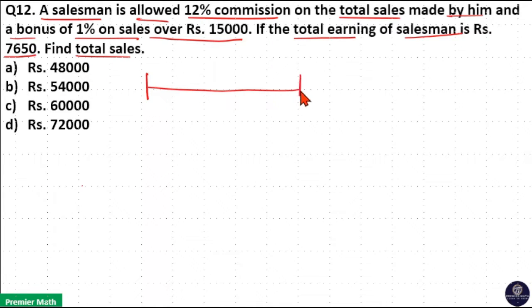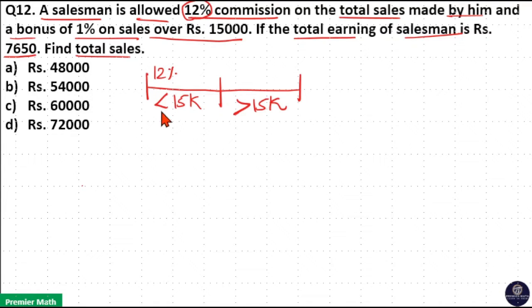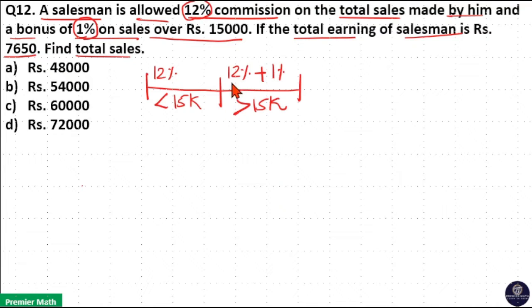I will split the total sales into sales below ₹15,000 and sales above ₹15,000. He gets 12% commission for total sales — that is, 12% for both below and above ₹15,000. He also gets a 1% bonus for sales over ₹15,000, making it a total of 13% for sales over ₹15,000 and only 12% for sales below ₹15,000.